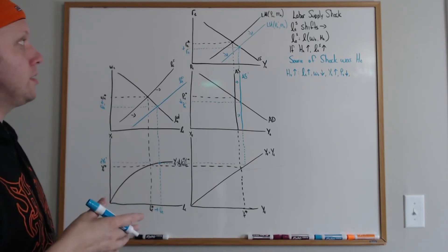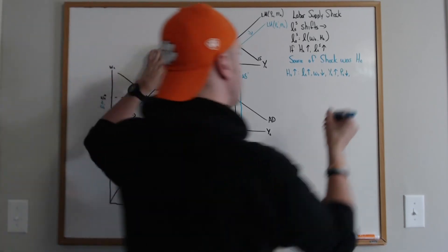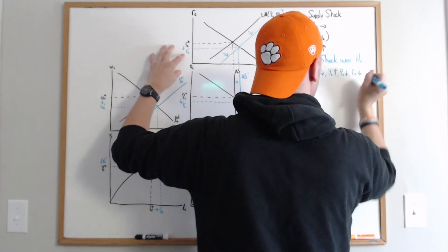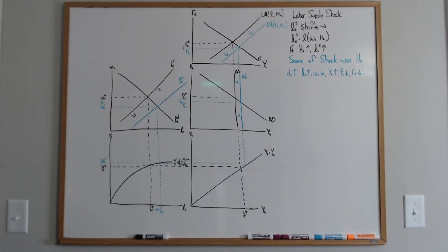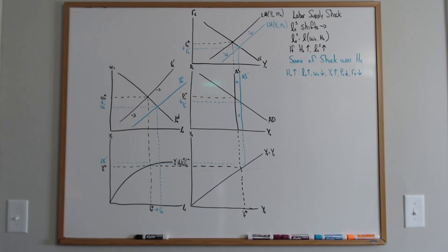Let's look at the real interest rate — it falls. So we have a set of qualitative responses that indicate what happens when there's a labor supply shock. Now that we've talked about two different types of shocks, let's talk about identification. What I mean by identification is being able to uniquely identify shocks based on the way these variables respond — basically, do they move in different directions under some shocks than under others?